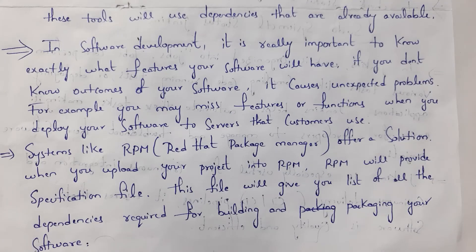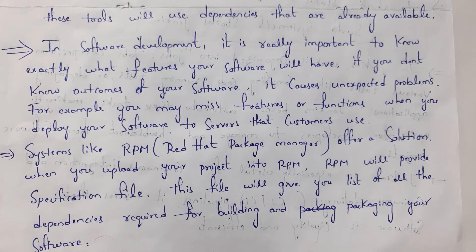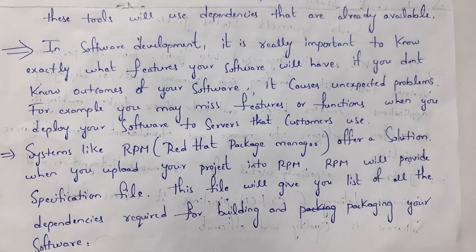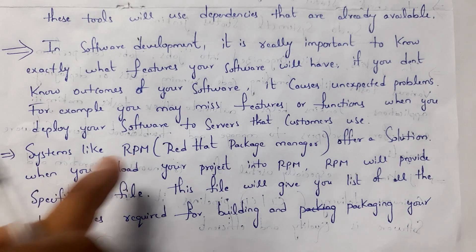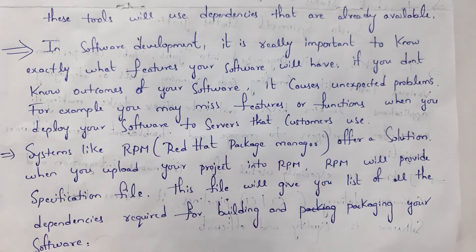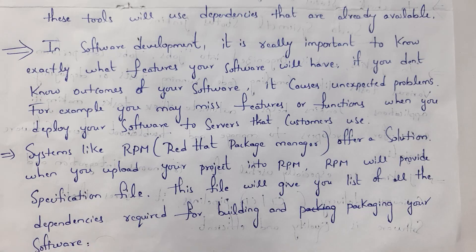In software development, whenever you want to develop any software, you need to have a clear idea about the features of the software. For example, if you want a college application, you need to know all features like student login form, faculty login form, student attendance, faculty attendance, and so on. After placing your software in a server, if you miss any feature it will be very tough to modify the entire code again. If you don't know what dependencies are required for your project, you can use tools like RPM — Red Hat Package Manager. When you upload your project into RPM, it will automatically provide what dependencies are required, and based on that you can create them.